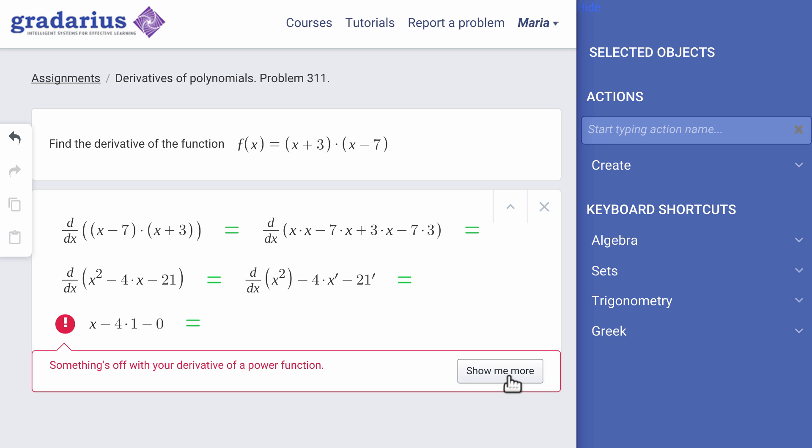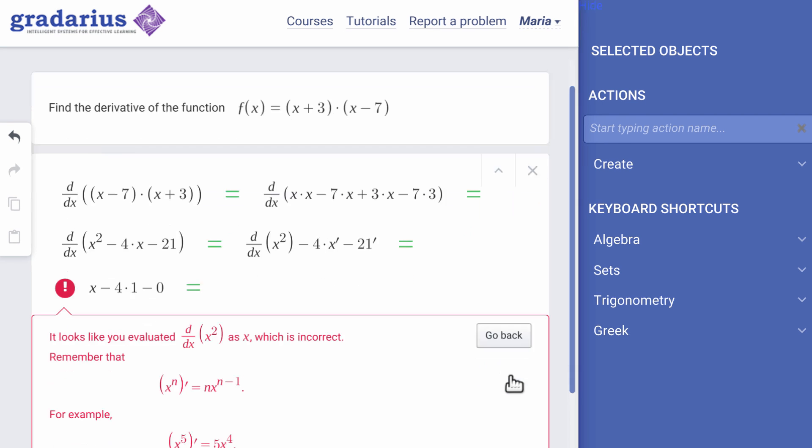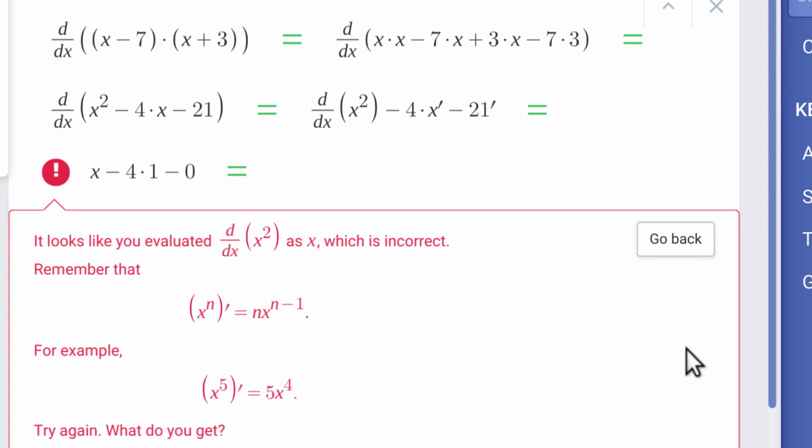By clicking Show Me More, Gradarius shows Maria exactly where she made the mistake. Gradarius also displays a quick review of the computational rule.